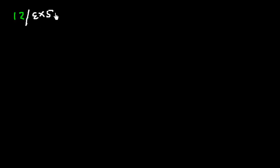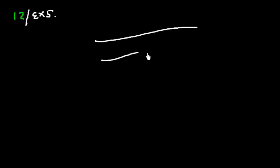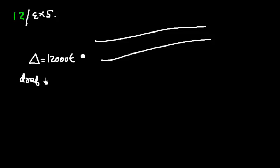This is problem number 12 of exercise 5. A vessel of 12,010 ton displacement arrives at the mouth of a river drawing 10 meters in salt water. The vessel's displacement is 12,010 tons, arriving at the river mouth — let's call this point A — with a draft of 10 meters. The density is salt water, meaning relative density 1.025.